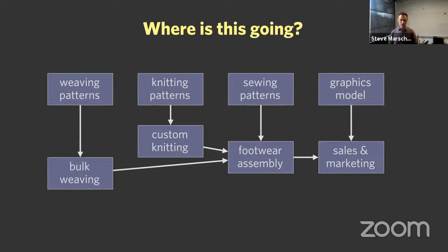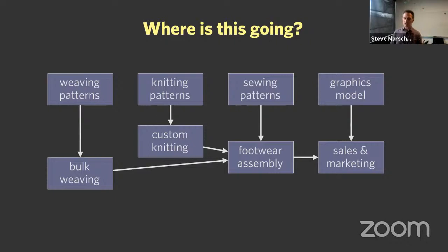I'll use a shoe as an example — not a 3D woven shoe, but a regular shoe that might contain woven fabrics or custom knitted uppers. There are computer systems to support each different manufacturing step: designing weaving patterns, designing knitting patterns, CAD software for sewing patterns — each feeding into one step of manufacturing. And these days, everybody needs a computer graphics model to show things spinning in 3D on their website.